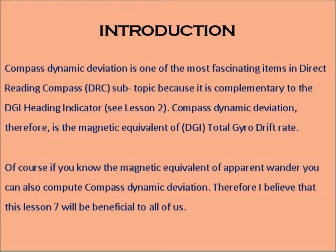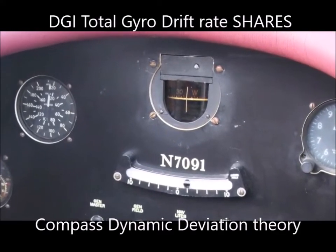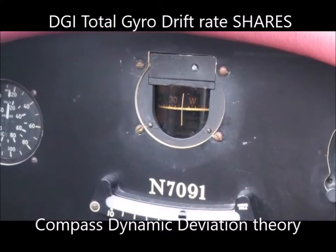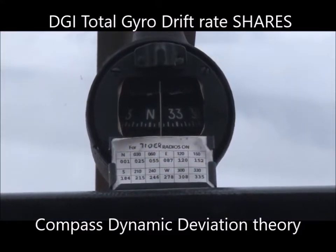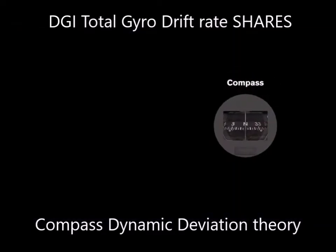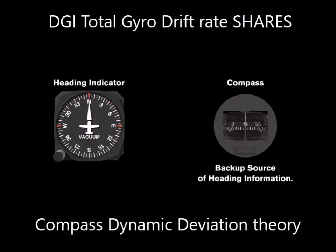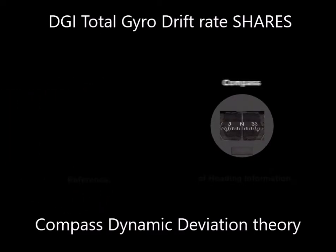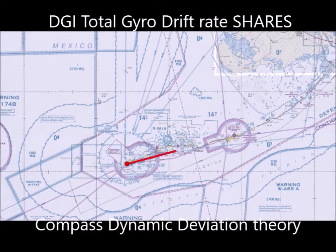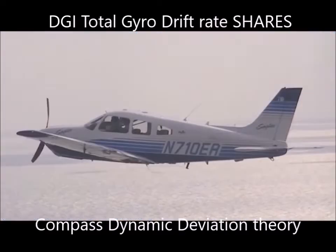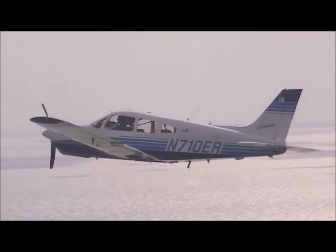Of course, if you know the magnetic equivalent of apparent wander, you can also compute compass dynamic deviation. The magnetic compass is one of the oldest instruments installed in an airplane, and in many older aircraft it is the only direction-seeking instrument. The compass is self-contained and does not require electricity or any other mechanism to work. It is normally used as a backup source of heading information while the gyroscopic heading indicator serves as the primary heading reference. If your heading indicator fails and you understand the limitations of the magnetic compass, you should be able to navigate properly. Remember that the compass is accurate only when the airplane is in smooth air, in straight and level, unaccelerated flight.